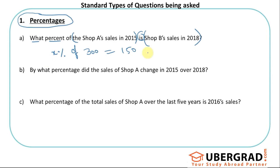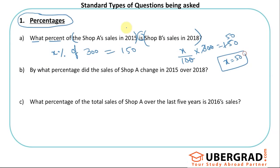Simply write it as: x/100 × 300 = 150. Solving this, x = 50. So the answer is 50% — meaning 50% of Shop A sales in 2015 equals Shop B sales in 2018. I took x as the answer for 'what percent,' so x comes out as 50, not 50 percentage points on its own.